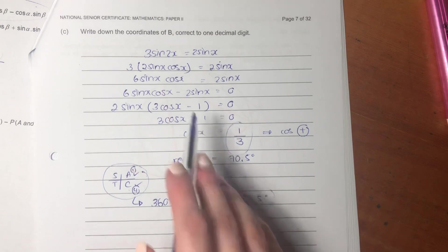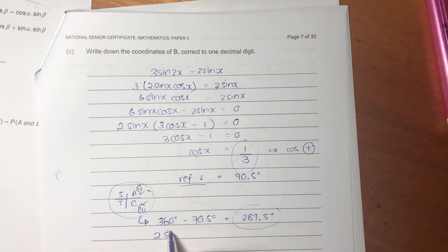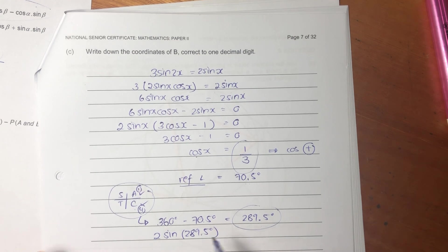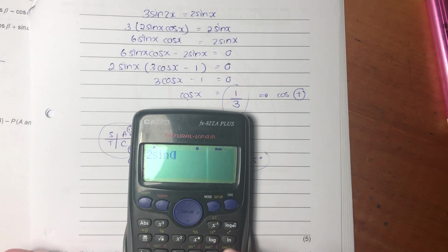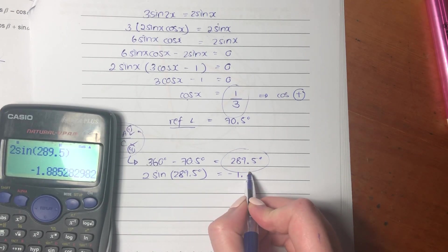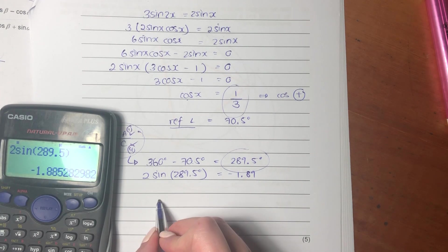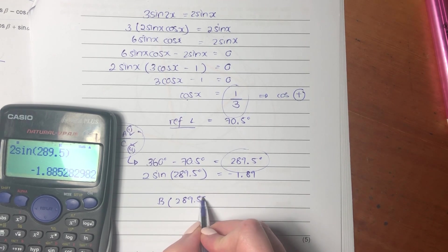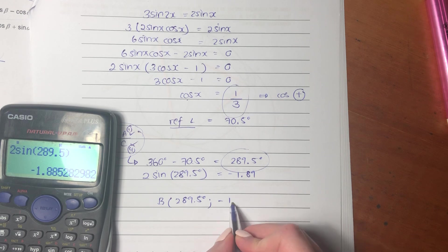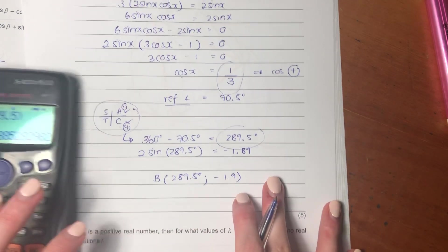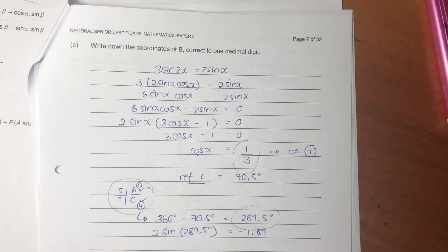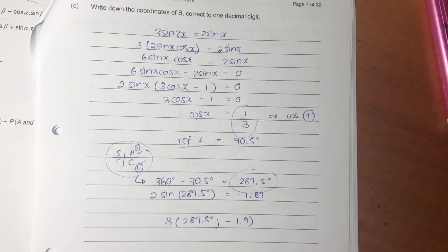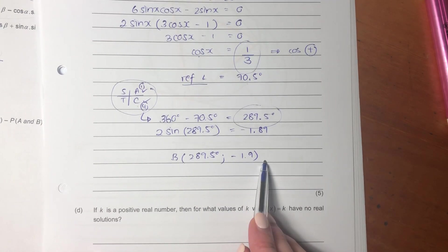And that's why I said 360 minus my reference angle gives me my x value at B. So now we have the x value at B. We can then just sub this x value at B into, let's just put it into 2 sine, and let's get our y value. So I'm going to say 2 sine 289.5 and I get negative 1.89. So my coordinates at B are 289.5 and negative 1.9. Now, the reason I said 1.9 is because they specifically asked me in the question to give the coordinates of B correct to one decimal digit. Answer the question that has been asked. Don't lose marks for silly things like that.